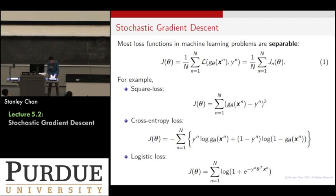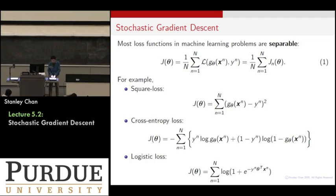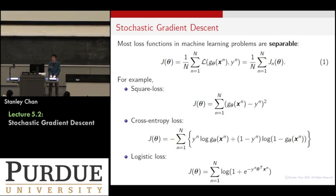This holds for many common losses used today. It can be square loss, where the loss is the squared term of individual errors. You can have the cross entropy loss, which is: y times log of the probability, plus one minus y times log of one minus the probability. That's for the two-class classification problem. You can also use logistic loss. All of these loss functions can be written as a sum of individual terms.